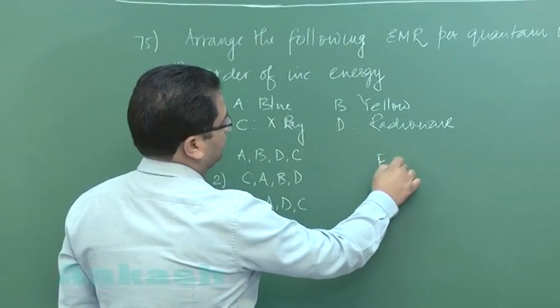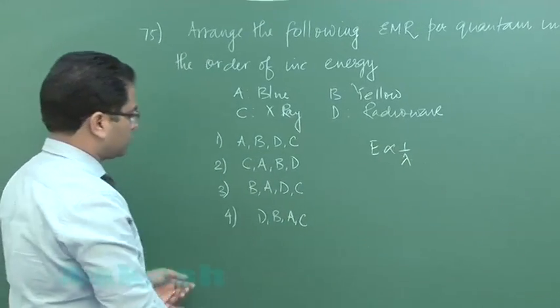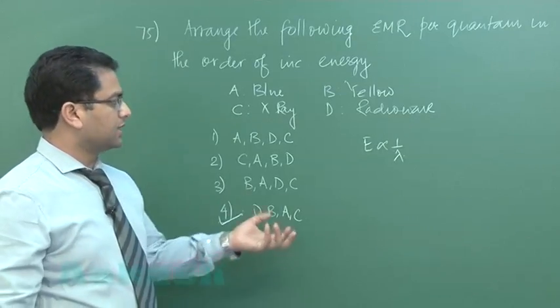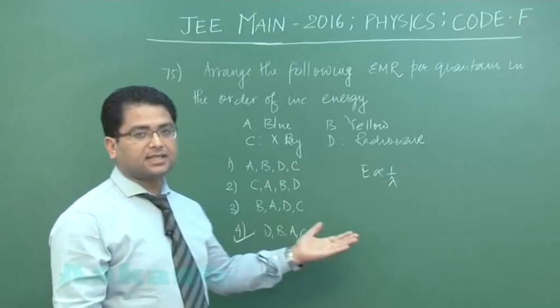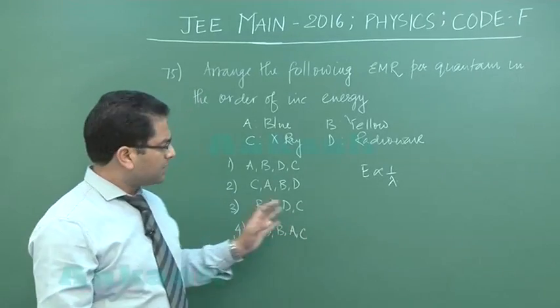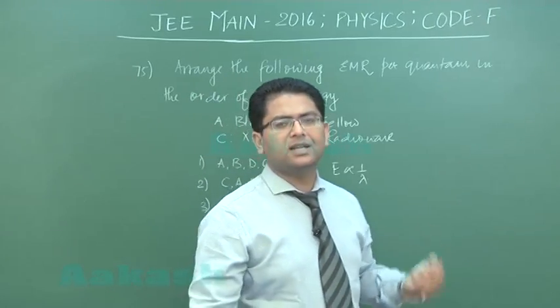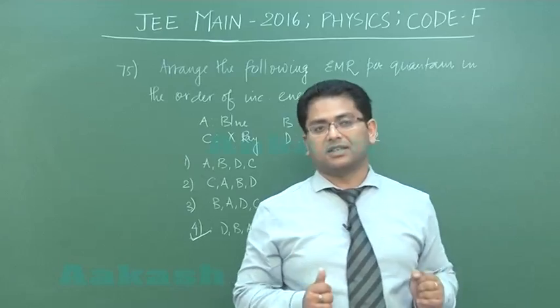Now energy is inversely proportional to lambda. So you can see option number 4 would be correct. The highest wavelength will have the lowest energy and the lowest wavelength will be having the highest energy. These wavelengths are so familiar to us that we can easily arrange them in the order of increasing energy.